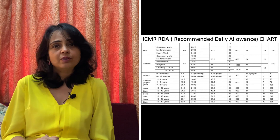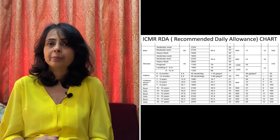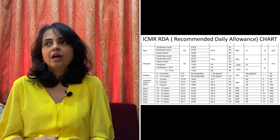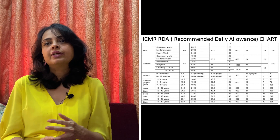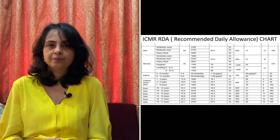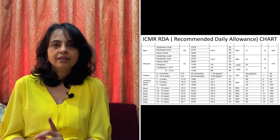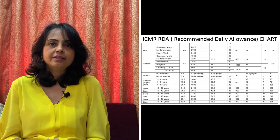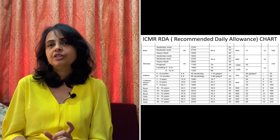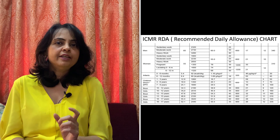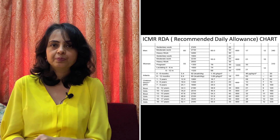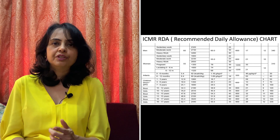Let's take an example. If I need to calculate my calorie requirements, I look at the ICMR chart. According to the chart, my RDA requirement for calories is 1900 kilocalories — this is the total amount of energy that I need in a day. From this I need to calculate my carbohydrate, protein, and fat composition.